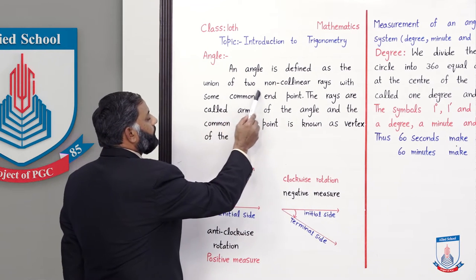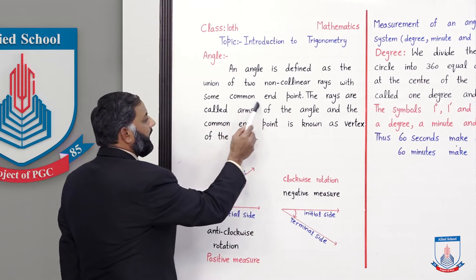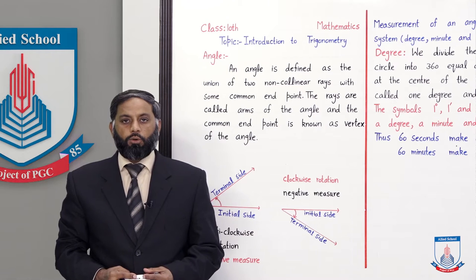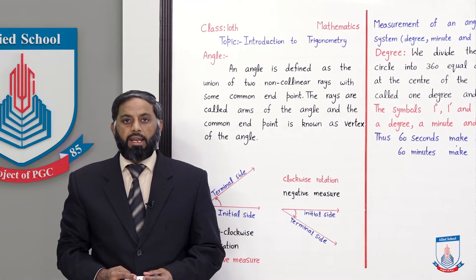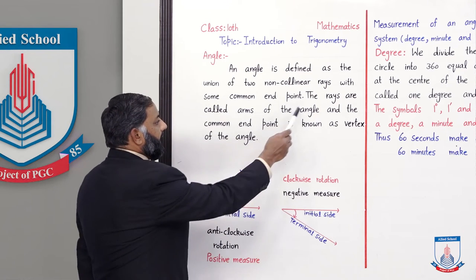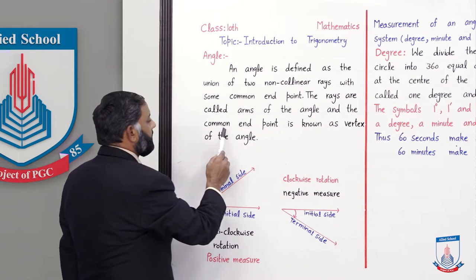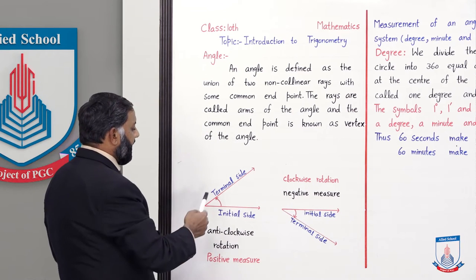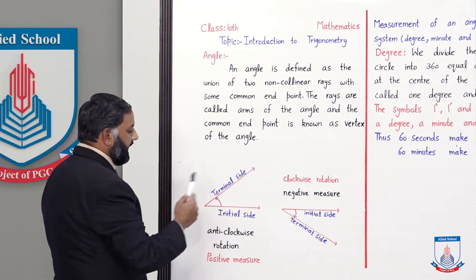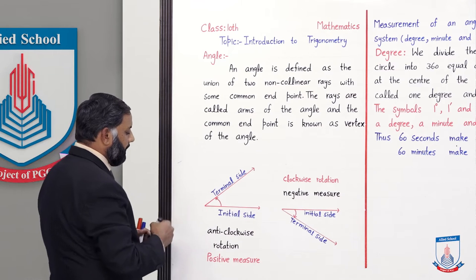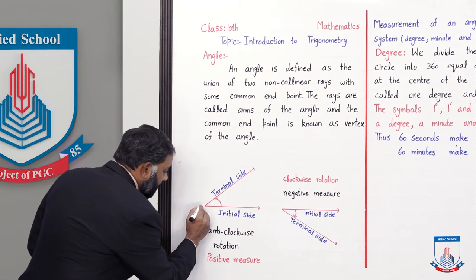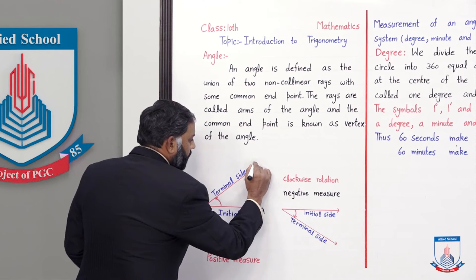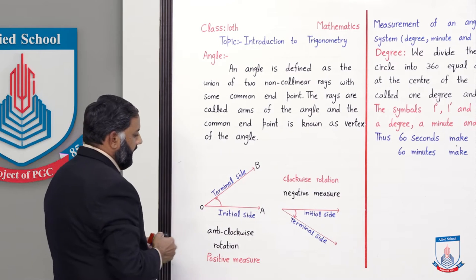An angle is defined as the union of two non-collinear rays with a common end point. Students, the union of two non-collinear rays is called an angle if they have the same common end point. The rays are called arms of the angle. I have drawn an angle here — there are two non-collinear rays and their union, with a common end point O.